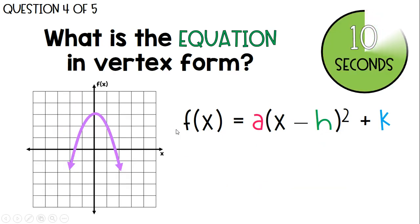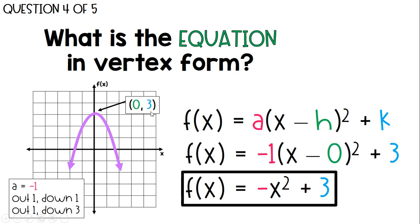Next one. Notice your vertex and then your a value. All right. So our vertex here is at 0, 3, and our a value, we should notice, goes out 1, down 1, out 1, down 3. So that would mean with a vertex at 0, 3, x minus 0 and then plus 3 at the end. x minus 0 is just x, so that says x squared. My a value is actually a negative 1. Notice this is a downward facing parabola. And if it's going out 1, down 1, out 1, down 3, it's not positive 1, it's negative 1.